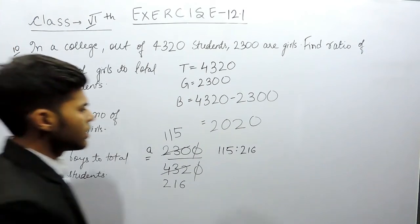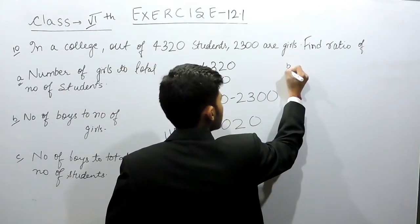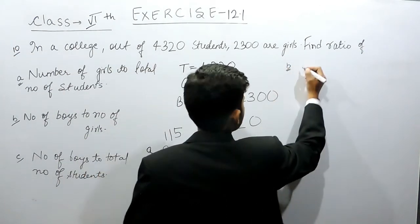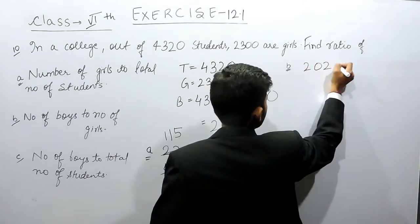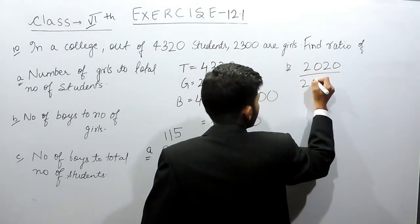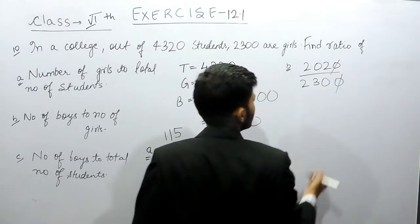Now, part B, number of boys to number of girls. Number of boys is 2020 and number of girls is 2300. So, this will be cancelled out.